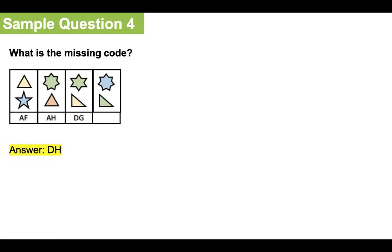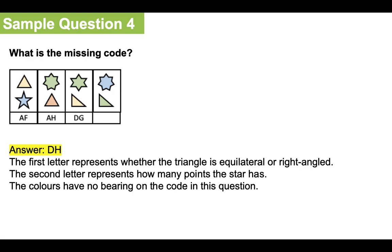And the answer is D H. Now, the first letter represents whether the triangle is equilateral or right angled. The second letter represents how many points the star has. And the colors have no bearing on the code in this question.